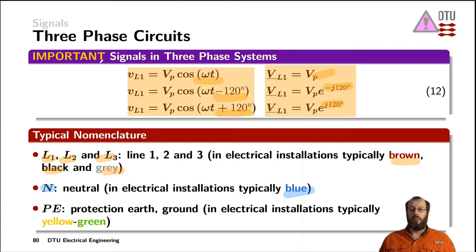And then there is the protection earth wire coming in a three-phase system, also called the ground. In an electrical installation that one is typically marked as the yellow and green one and is supposed to not carry any currents.